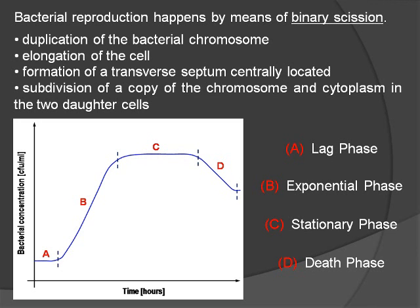When there is a lack of an essential nutrient or the formation of an inhibitory product due to bacterial metabolism, the bacterial growth rate slows down and the stationary phase begins. During the death phase, bacteria die. This could be caused by lack of nutrients, environmental temperature above or below the tolerance band for the species, or other injurious conditions.